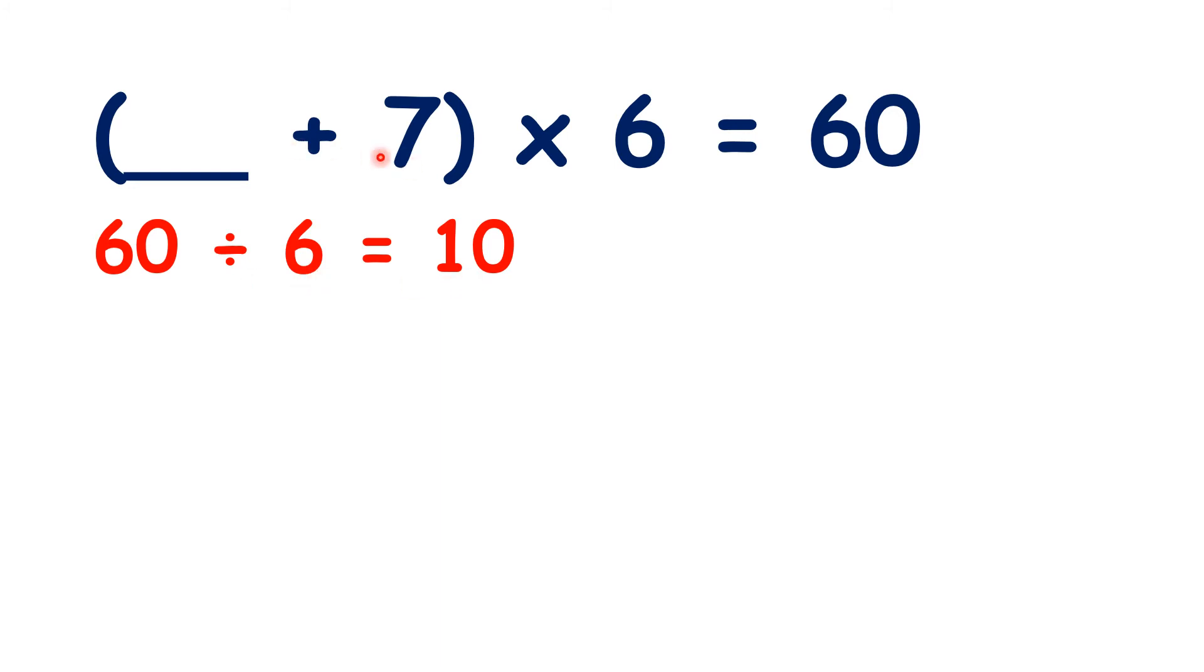Then, because they added seven, we can subtract seven, and that gives us our missing number, three. Three plus seven is 10, and then 10 times six is 60.